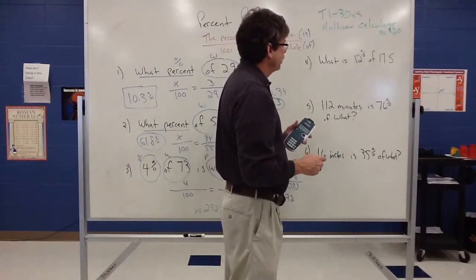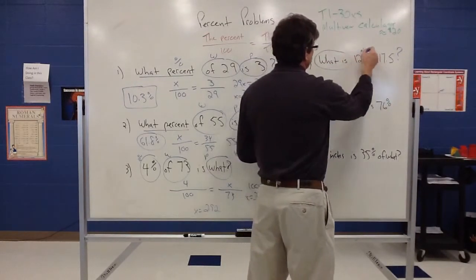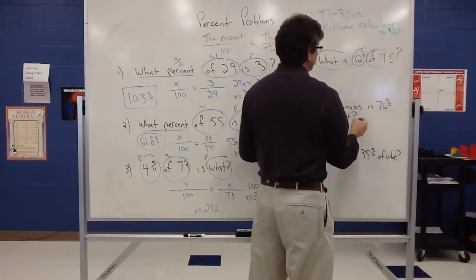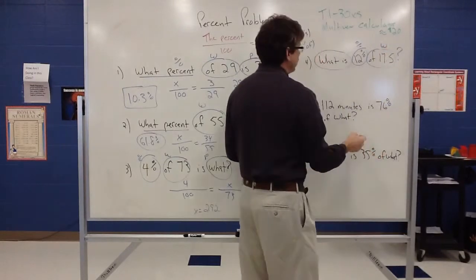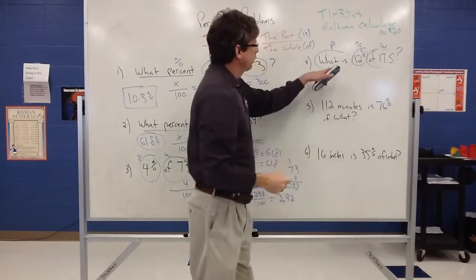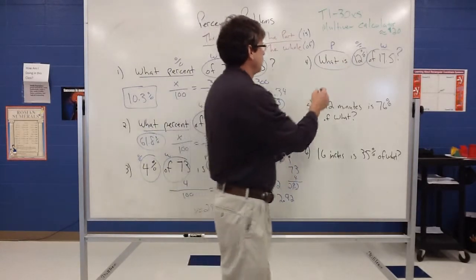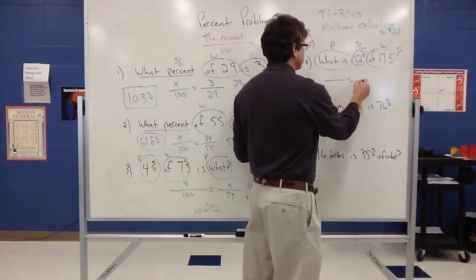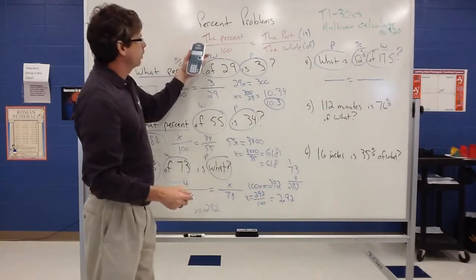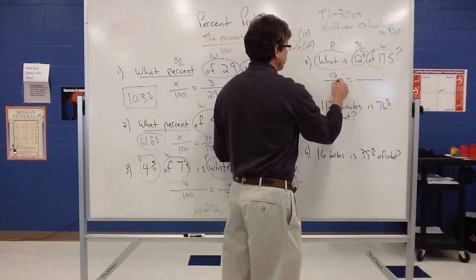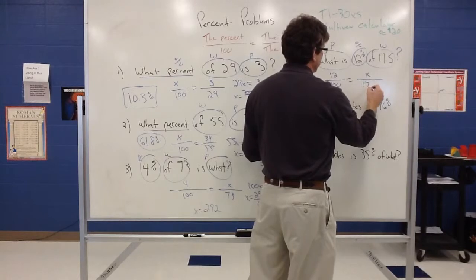So let's see, what is 12% of 17.5? Again, I have what is 12% of 17.5. There's my percent of 17.5, that's my whole. I must be looking for my part. So what is, notice how there's that is again, that kind of signals that that's the part that I'm looking for. So in my proportion, our percent goes over 100, so that 12 goes over 100. Then I don't know what the part is, that's my X, and my whole is 17.5.